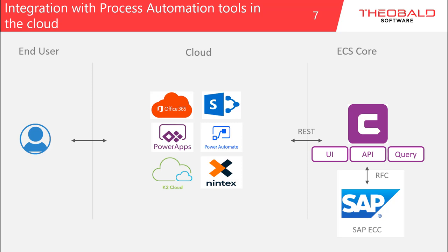So how would SAP integration with a process automation tool in the cloud look like? A user would start a process by filling some information in a web form or a SharePoint Online list, for example. This start event will trigger a workflow in one of the supported tools — Microsoft Power Platform, K2, or Nintex. For the SAP integration part, a REST service created with the cloud connector ECS Core is called up. There are different approaches supported for the SAP access: UI means transaction recording, where a transactional process in SAP can be recorded and wrapped into a web service; API means a function module or BAPI is called in SAP to read and write data; and query means just reading information from an SAP table.